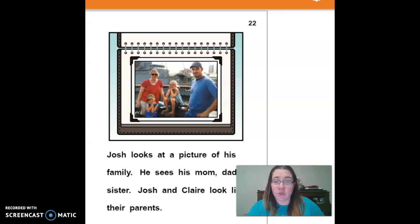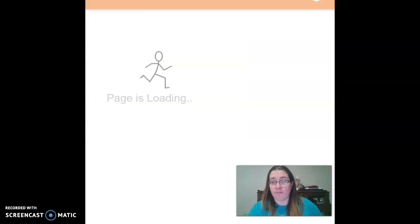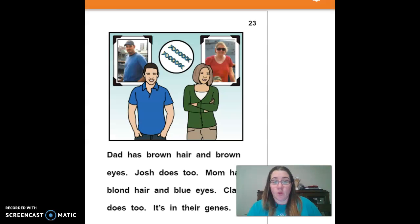Josh looks at a picture of his family. He sees his mom and dad and sister. Josh and Claire look like their parents. Dad has brown hair and brown eyes. Josh does too. Mom has blonde hair and blue eyes. Claire does too. It's in their genes.